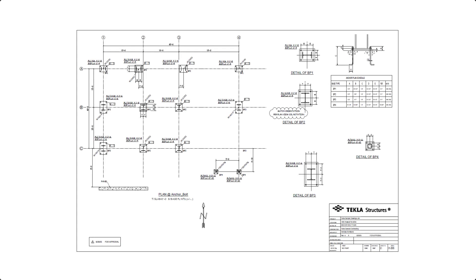In this video, we create and edit anchor bolt plans. An anchor bolt plan is a specific type of general arrangement drawing which displays the anchor bolt layout. Typically, you can create an anchor bolt plan as soon as the columns and anchor bolt components have been modeled.